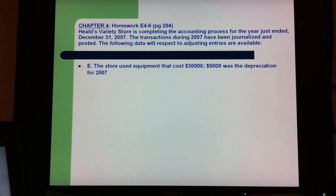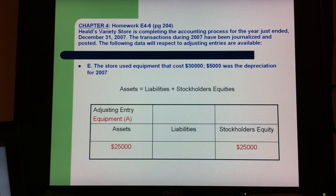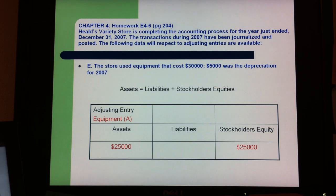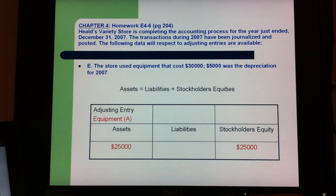Part E is about equipment. The store used equipment that cost $30,000, and $5,000 was the depreciation for 2007. In this case, $2,500 is recorded as an asset reduction and $2,500 for stockholders' equity.